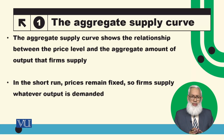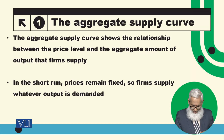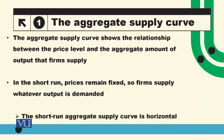So short-run میں prices fixed ہوتی ہیں اور اس fixed price پر جو بھی amount demand کی جائے گی وہ پوری کر دیں گے۔ اس کا نتیجہ یہ نکلے گا کہ short-run میں price change نہیں ہوتی اور output whatever is demanded وہ meet ہوتی ہے۔ So short-run aggregate supply curve will be a horizontal curve۔